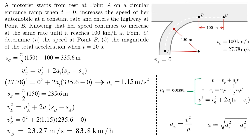Note that this result makes sense because V_B is less than V_C, and it is closer in value to V_C than to V_A, which equals zero. This is consistent with the car accelerating continuously from A through B to C.